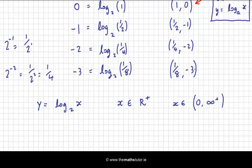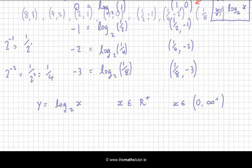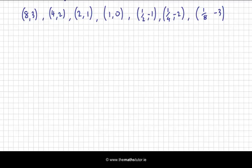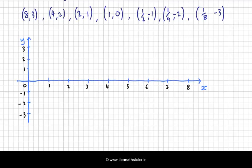I should rewrite my x and y coordinates somewhere where I can see them, and then I'll plot the graph. Okay, these are my x and y coordinates. So my x axis I want to go from 0 up to 8, but I also want to have halves and quarters, so I want to make sure that my spaces are quite big. My y axis I'm going to go from plus 3 down to minus 3. So let's just sketch that now. I've sketched my x and y axes and I've allowed myself enough space to put in halves, quarters, and an eighth.